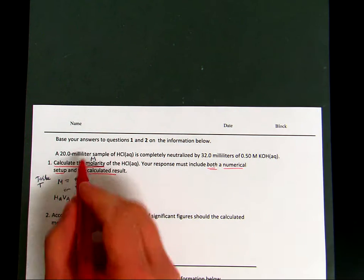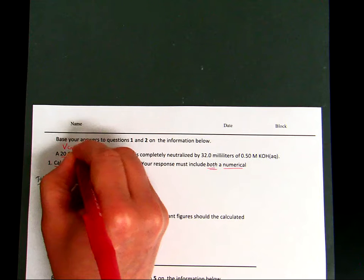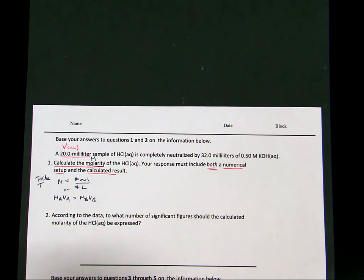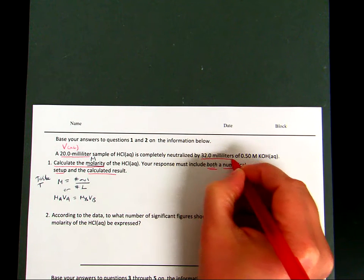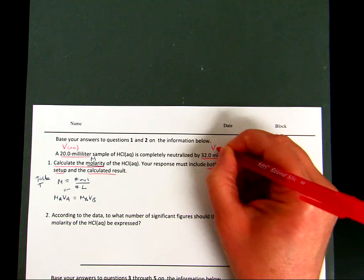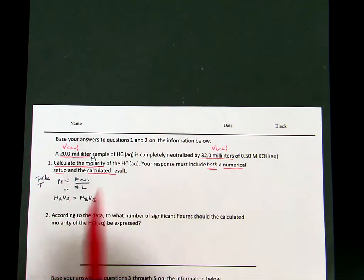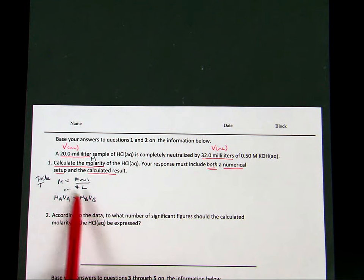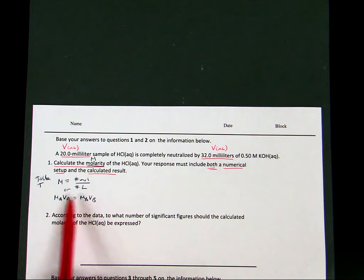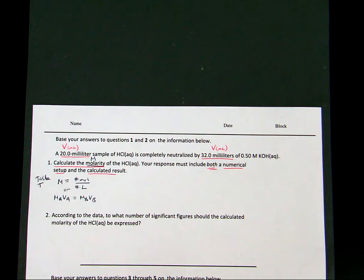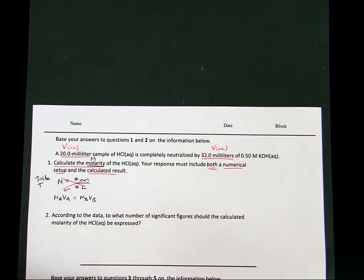So go back up to your information and take a look. So I notice right away, I have a 20.0 milliliter. Milliliter is a volume and it's in the unit of milliliters. If I continue across, I see that I have a second value, 32.0 milliliters, which is a volume in milliliters. So right away, I have two volumes in milliliters and I notice the first relationship, it has only one volume but it must be in liters. But the second relationship has V's for volume and it doesn't designate specifically liters. So I'm going to say probably the best choice is the MAVA equals MBVB.